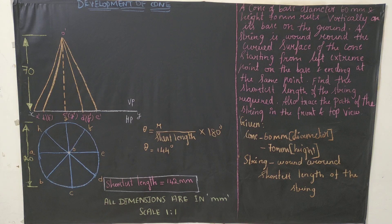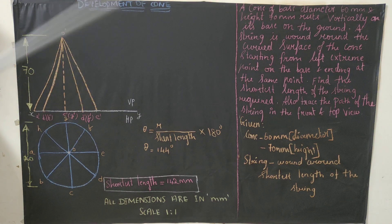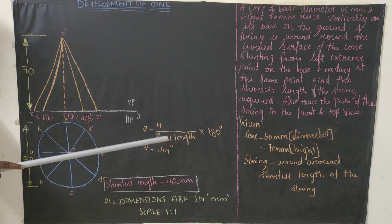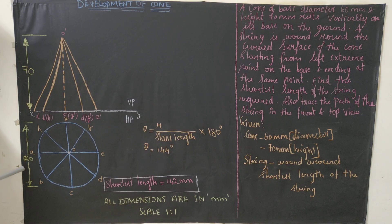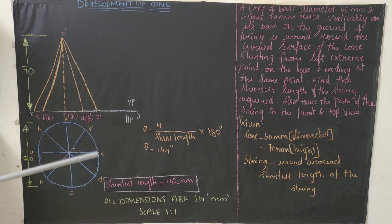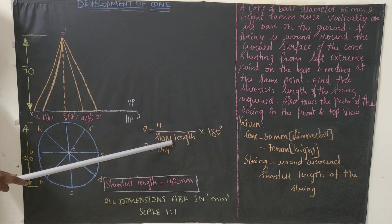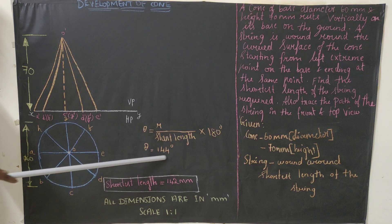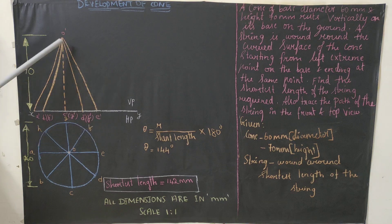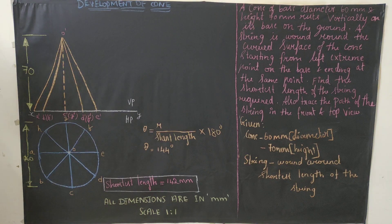We have completed the base diagram. Since we have a cone, we use the radial line method. For this we need to calculate the angle: θ = (r / slant length) × 180°. The radius r = 30 mm. The slant length is O' to E' or O' to A' - both give the same answer, approximately 75 mm. Calculating gives θ = 144°.